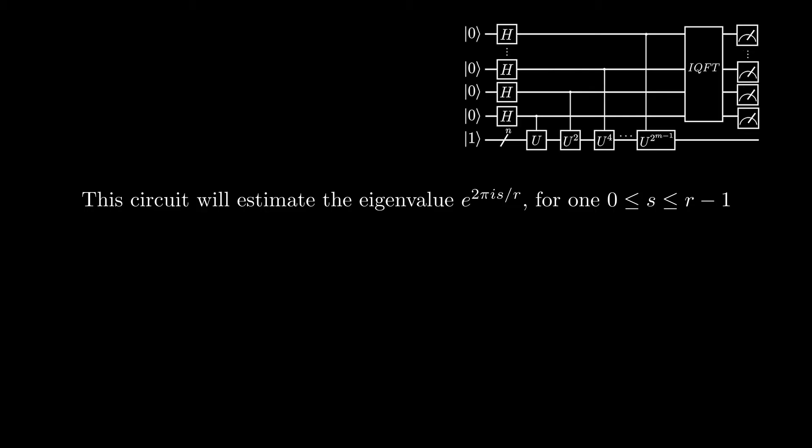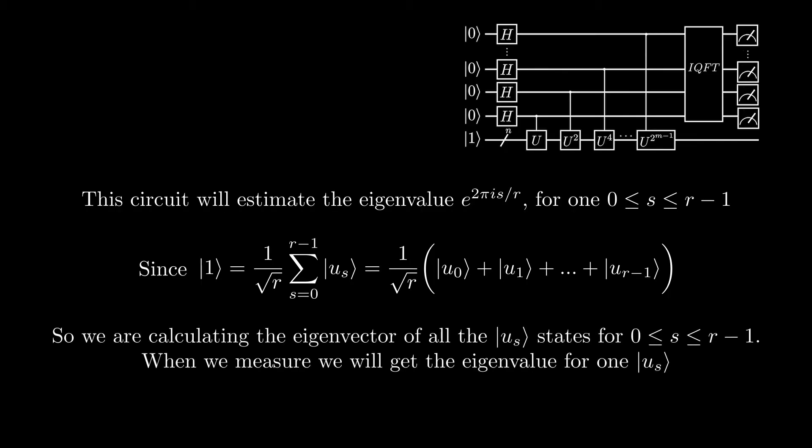This is because our eigenvector 1 mod n is equal to 1 over root r times the sum from s equals 0 to r minus 1 of us. So we will get the eigenvalue e to the power of 2 pi i s over r for one value of s. So when we measure the qubits, we will get the eigenvalue of 1 of the us's, which means that we will get s over r for 1 s from 0 to r minus 1. If we happen to get 0 as our eigenvalue, so s equals 0, then we repeat the circuit so we can get an eigenvalue that is non-zero.